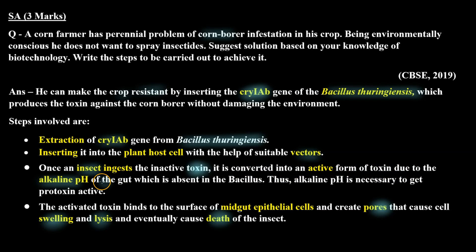Thus, alkaline pH is necessary to get the protoxin active. The activated toxin binds to the surface of midgut epithelial cells and creates pores that cause cell swelling and lysis, eventually causing the death of the insect. I hope this question is clear to you. Thank you.